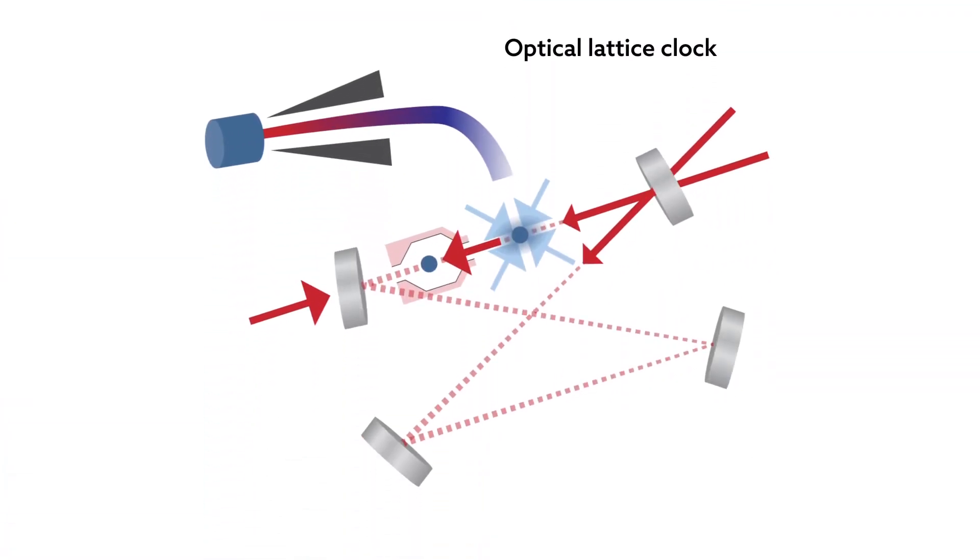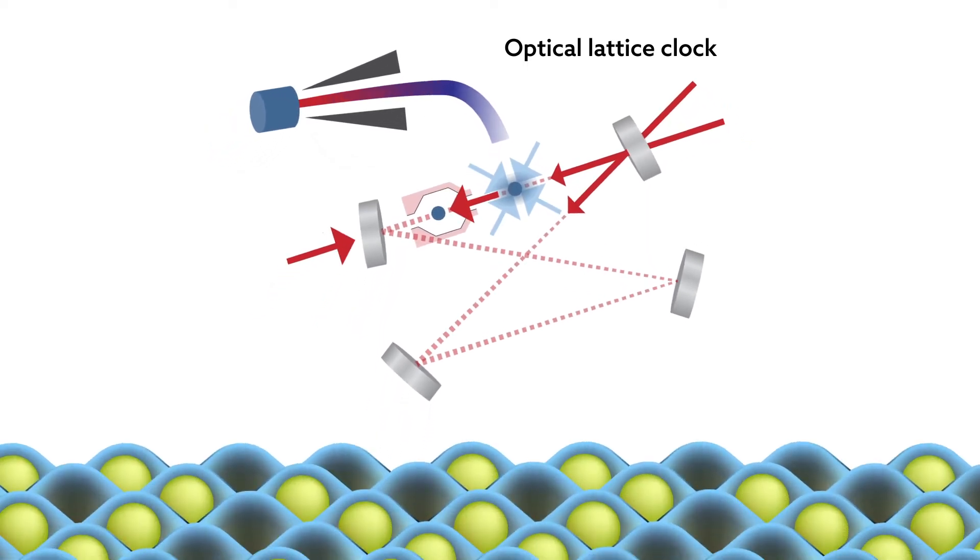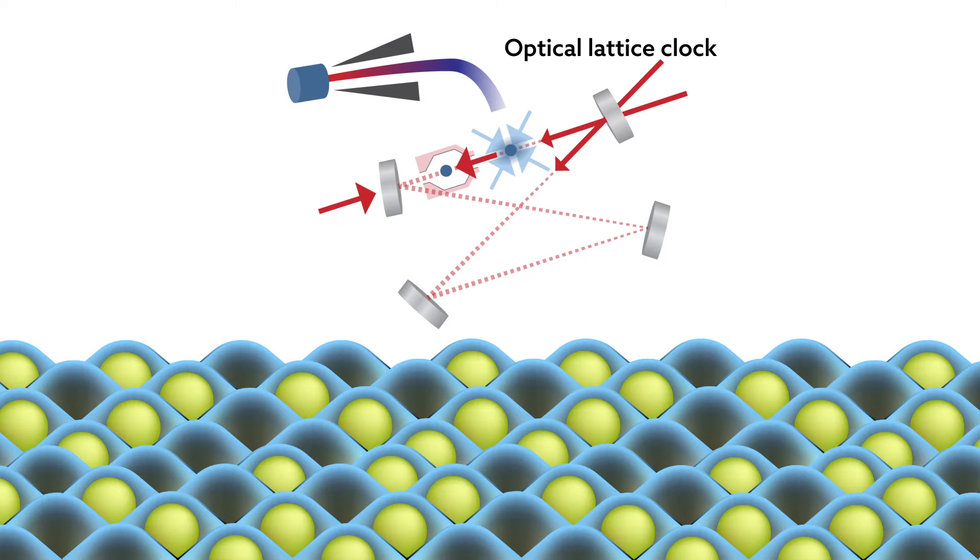An optical lattice clock works by using laser cooling to corral atoms into a well-defined spatial pattern, or lattice. Because the parameters describing this system are so well-defined, scientists can reduce the tiniest disturbances to atomic pendulums. The oscillation of these undisturbed atomic pendulums gives the tick of the optical lattice clock.